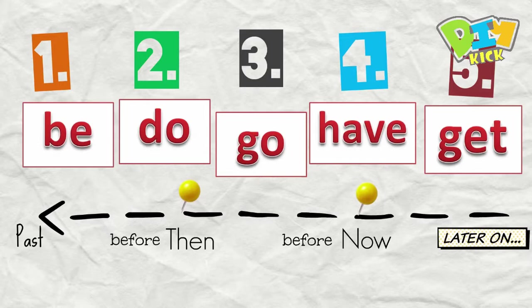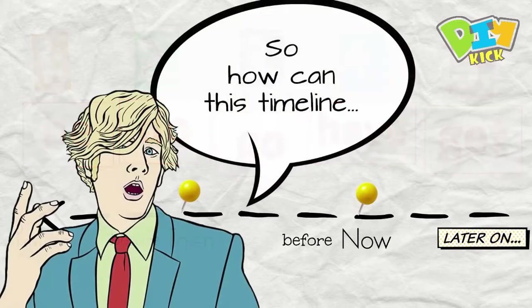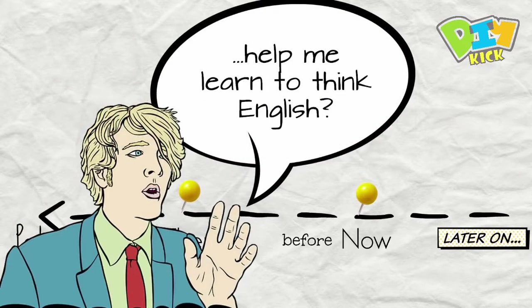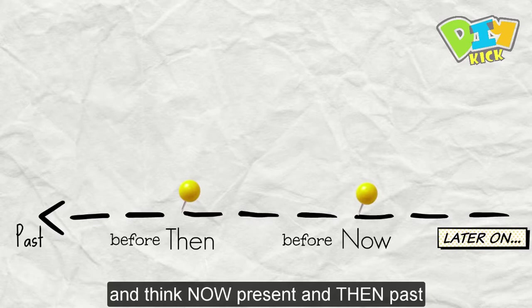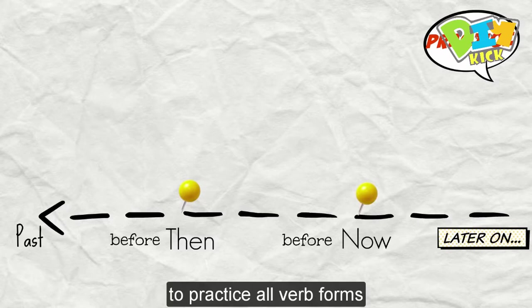Be, do, go, have, get. So how can this timeline help me learn to think English? You can always imagine this timeline and think now, present, and then, past, to practice all verb forms.